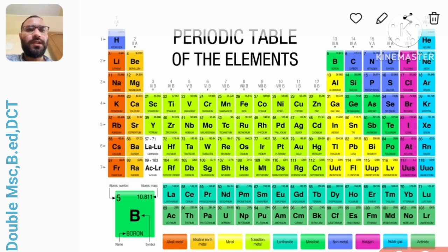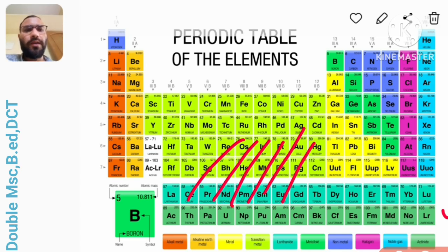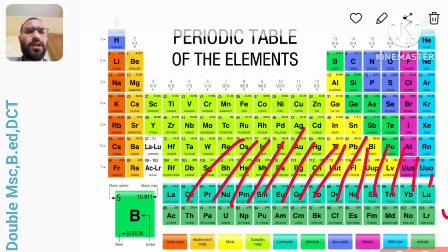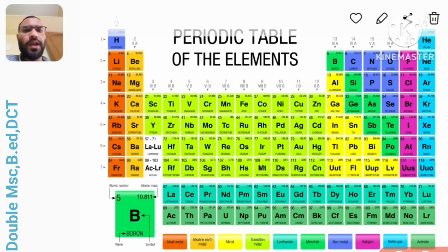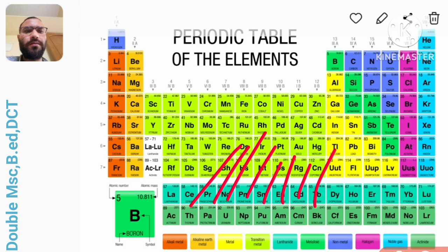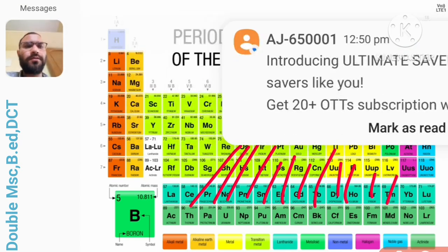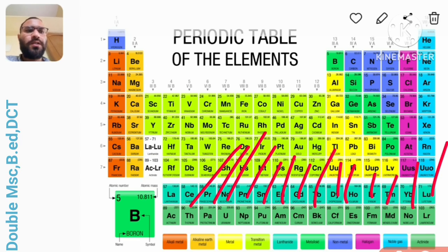Now moving to the last one that is actinide series of the f block. Here you have to remember: thorn protects uranus neptune pluto emmy cured berkelium californium einstein fermium made nobel laws. Here it is - actinium actually starts from thorium. Thorium, protactinium, uranium, neptunium, plutonium, americium, curium, berkelium, californium, einsteinium, fermium, mendelevium, nobelium and lawrencium.